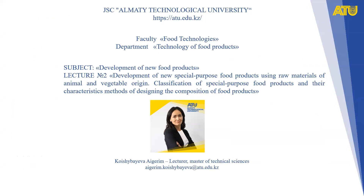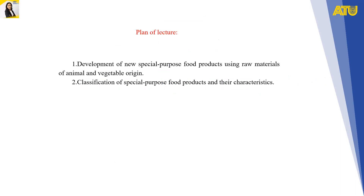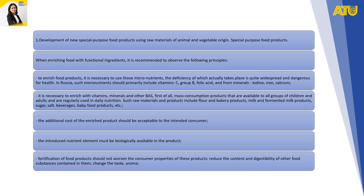Welcome to the subject: Development of New Food Products, Lecture number 2. Development of new special purpose food products using raw materials of animal and vegetable origin. Classification of special purpose food products and their characteristics, and methods for designing the composition of food products.